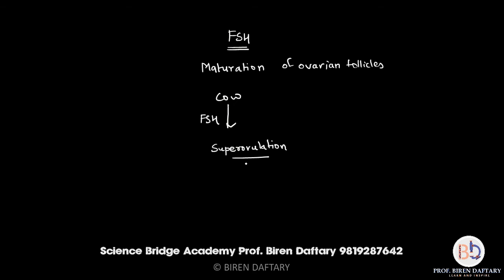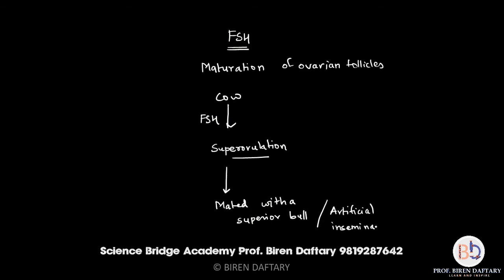When the cow is super ovulating, she is either mated with a superior bull — a bull with a very high rate of fertility — or artificial insemination is used to fertilize the ova. In artificial insemination, sperms are collected from a superior bull, stored, and whenever needed, the semen is inserted inside the reproductive tract of the female so the sperms fertilize the ova.